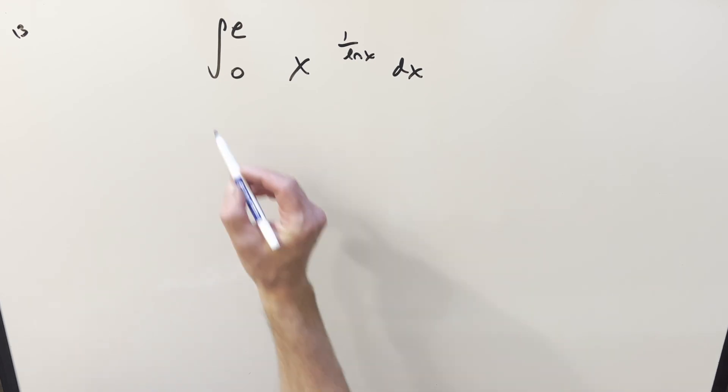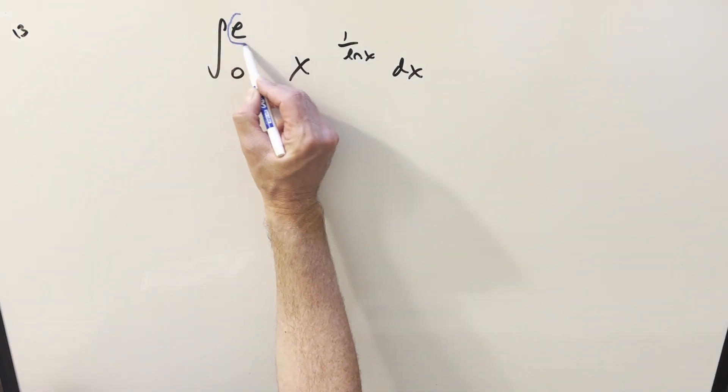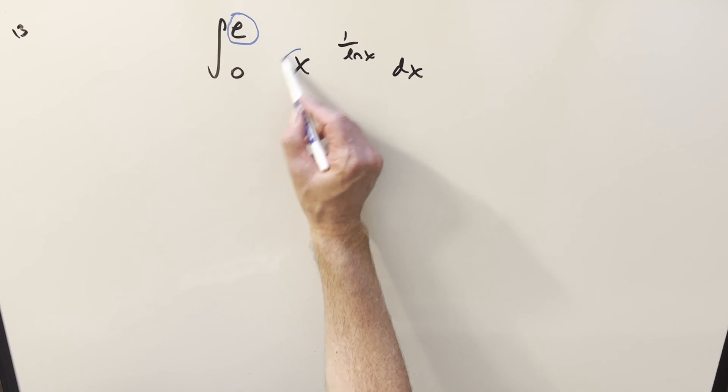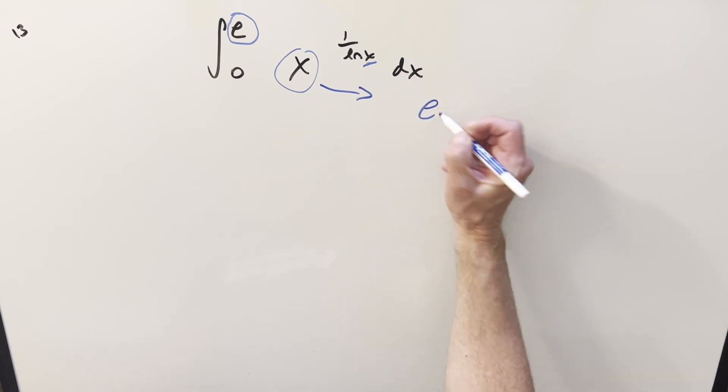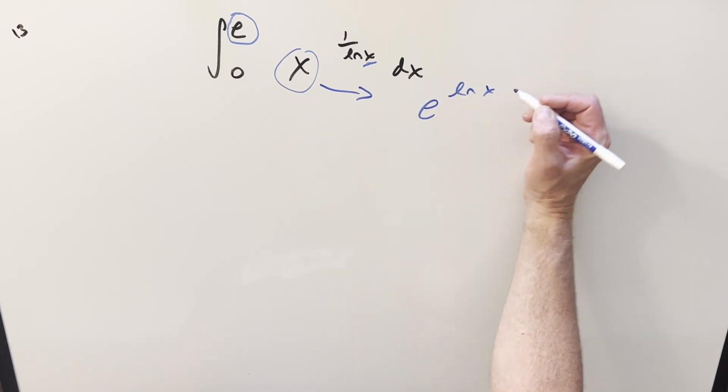Okay, there's just a lot of unconventional things here. Having E in the bounds is pretty weird, and then we've got x in the base and in the exponent. In a case like this, I don't want x in the base. So what we can do is for x, I can just rewrite this as e to the ln x.